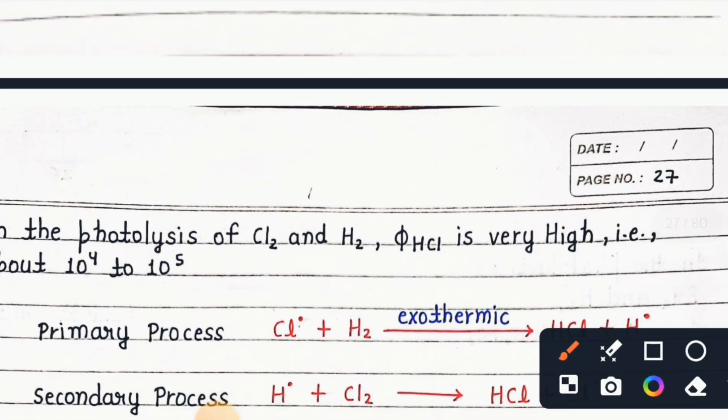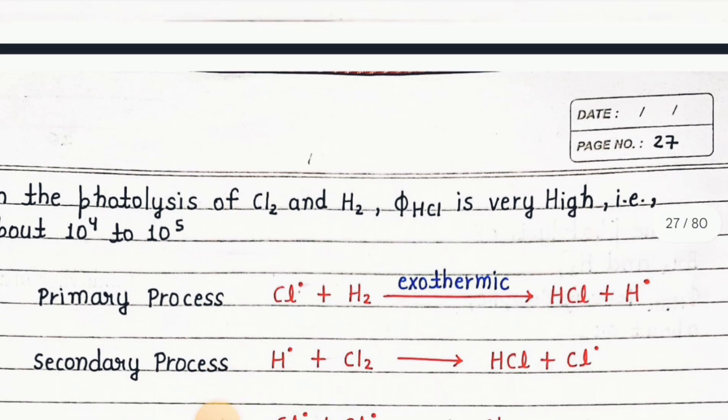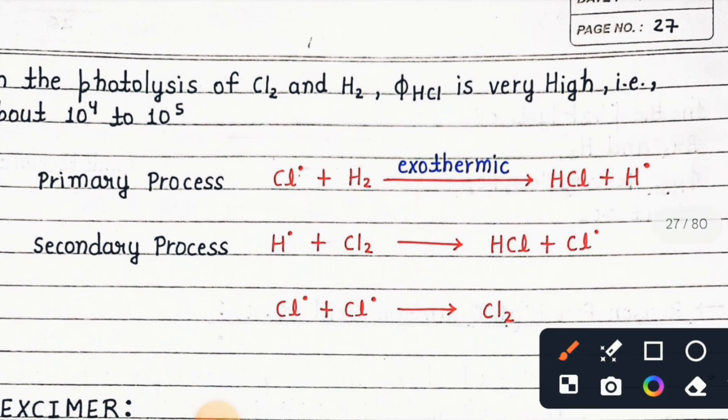In the photolysis of Cl₂ and H₂, φ(HCl) is very high, about 10⁴ to 10⁵. Primary process: Cl· + H₂ → HCl + H· (exothermic). Secondary process: H· + Cl₂ → HCl + Cl·. The Cl radicals combine together to form Cl₂.